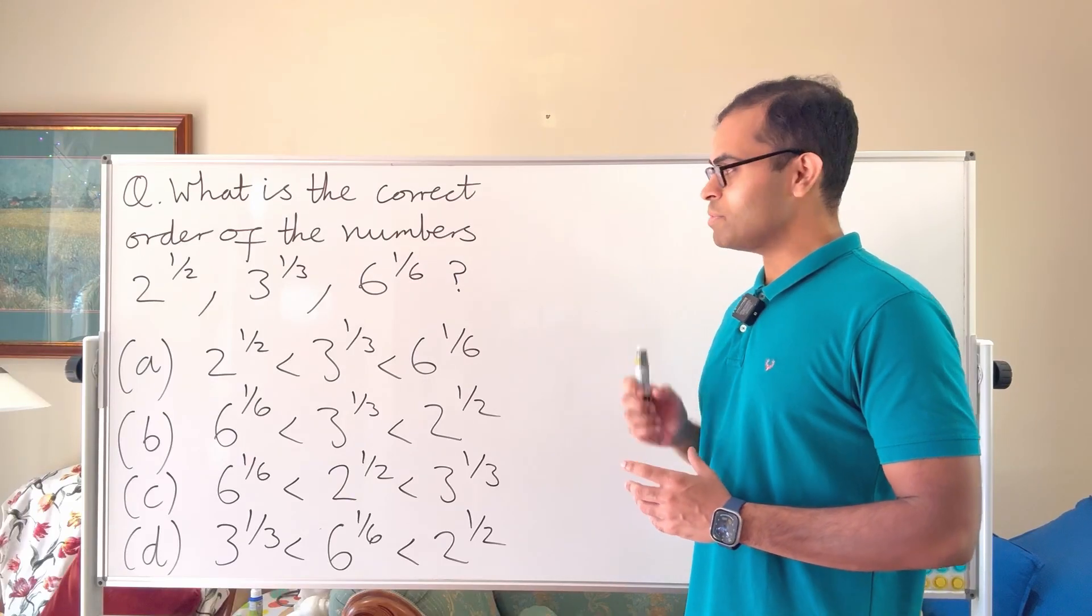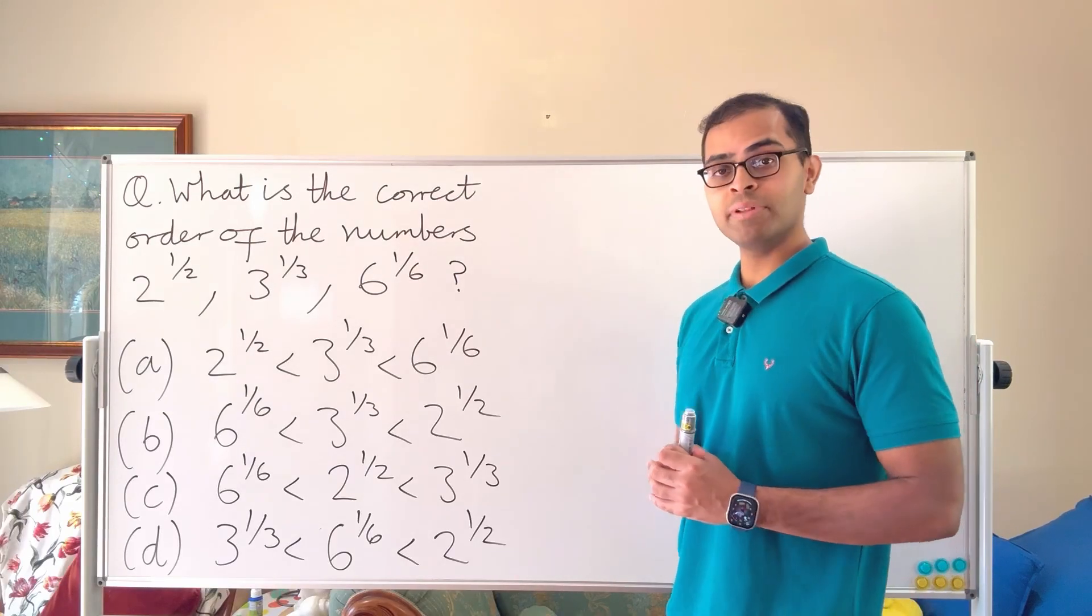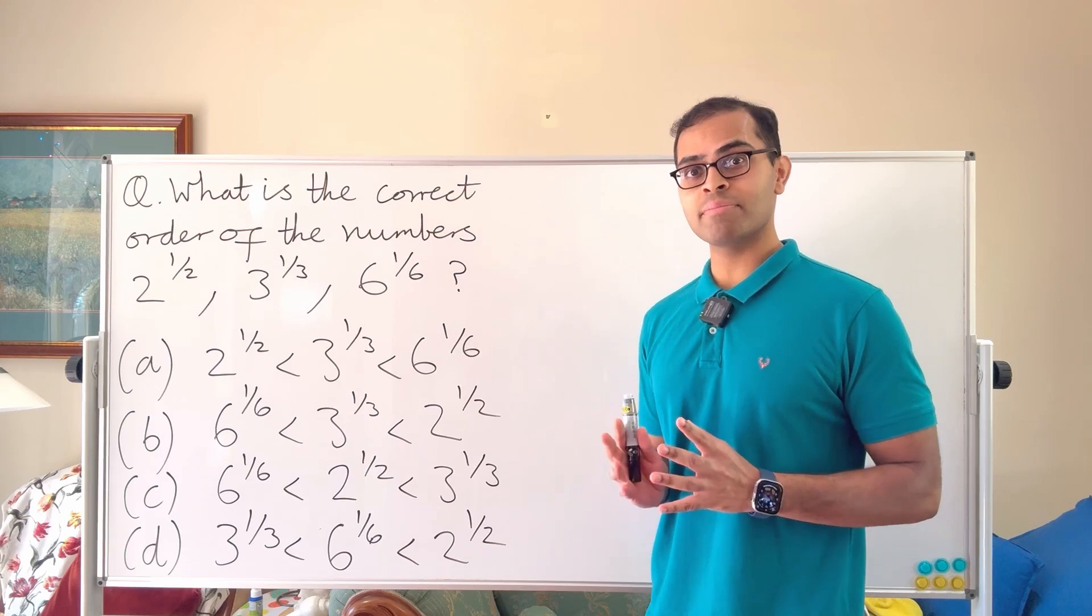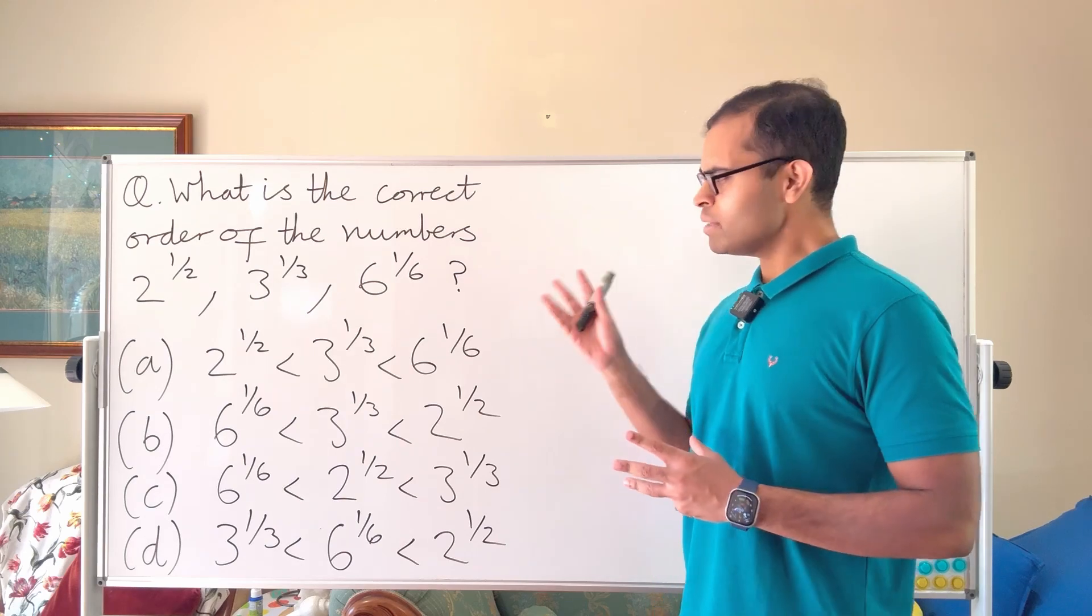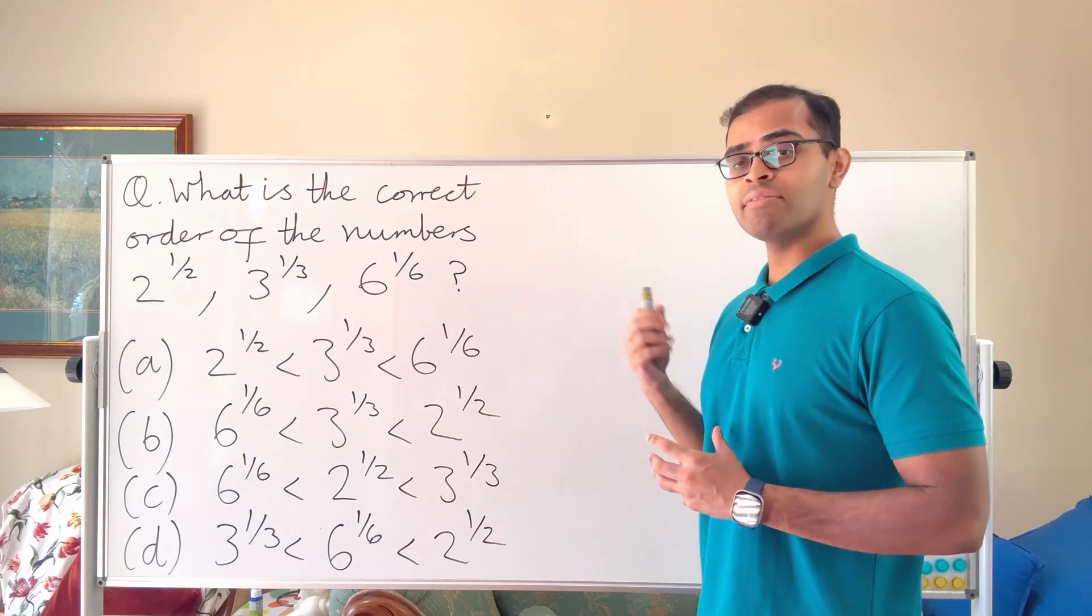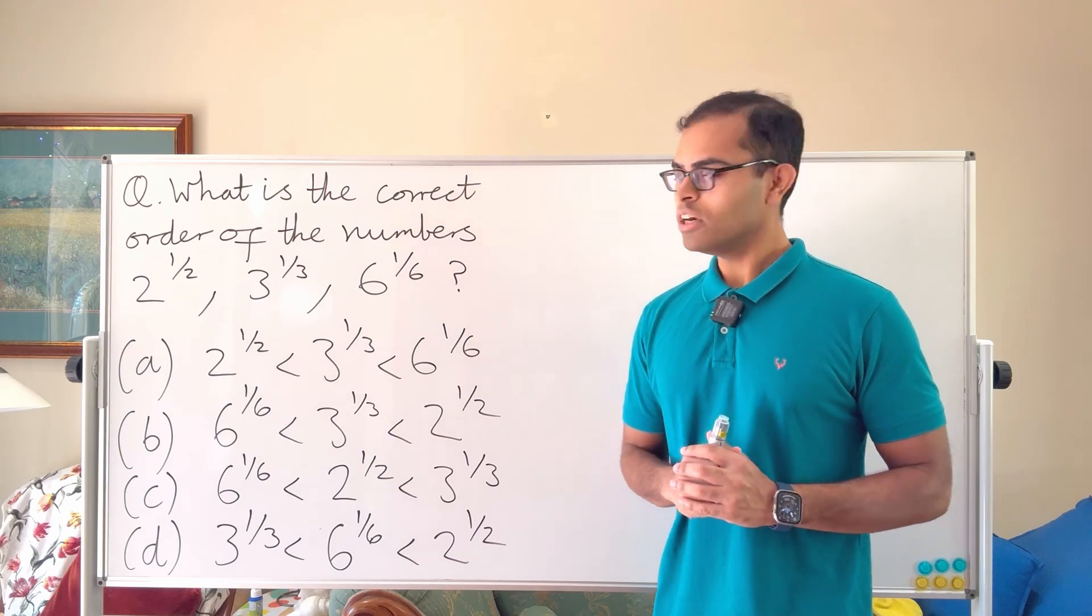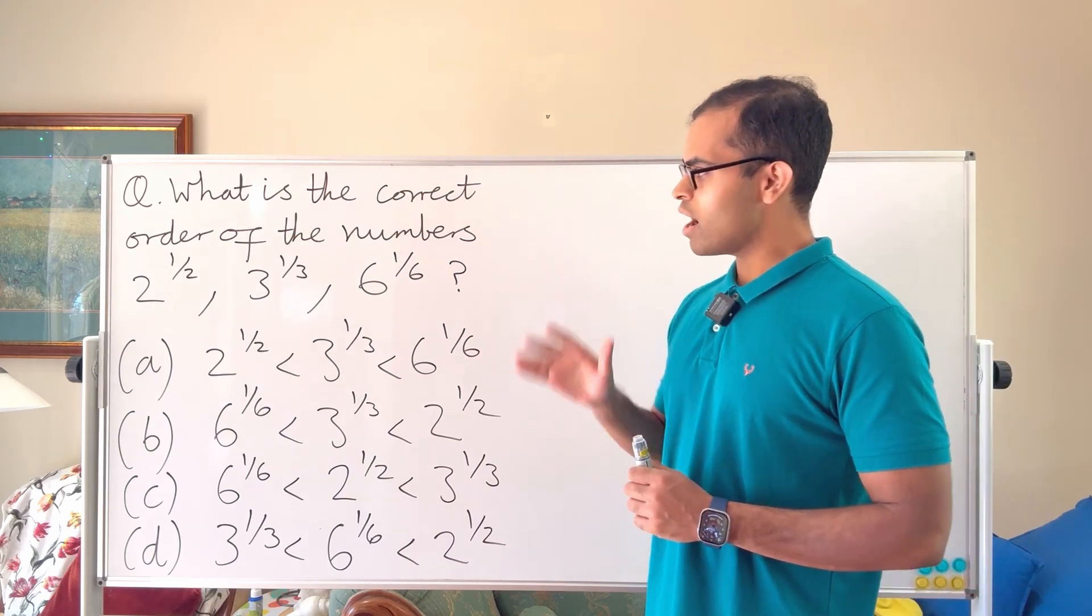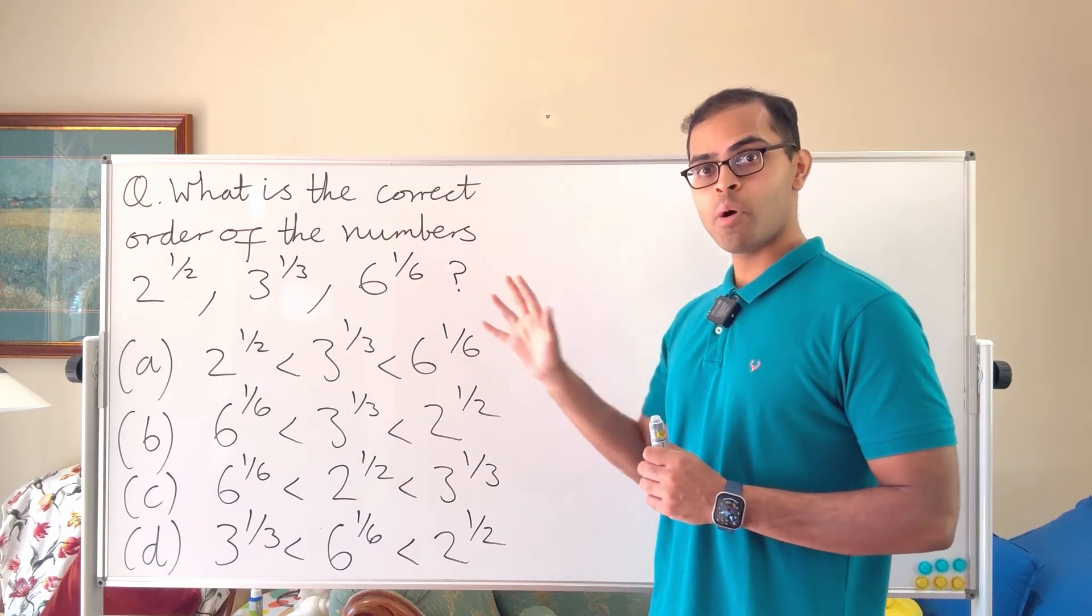All right, so questions similar to this have appeared on standardized math tests that people have to take to enter graduate school in mathematics in the USA. It seems deceptively simple, but let's dive into it and make it really easy. So here we have the numbers 2 power half, 3 power one third, and 6 power one sixth.